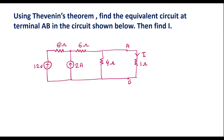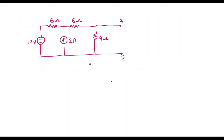In Thevenin's theorem, the branch in which we are calculating current must first be removed. So we remove the 1Ω resistor from the circuit. When we remove it, terminals A and B become open. Now we draw the equivalent circuit with the 1Ω resistor removed, and we need to find the voltage between these two terminals — that voltage is known as VTH, the Thevenin's voltage.